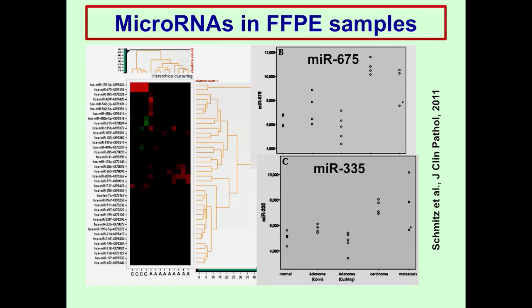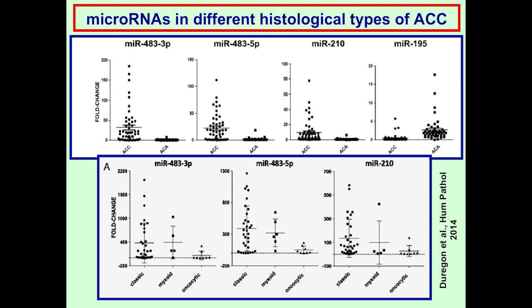As a demonstration of how archived formalin-fixed samples can be used for diagnosis, another study showed another set of overexpressed microRNAs — including miR-503 — and the two most significantly overexpressed were miR-675 and miR-335. In another recent study, microRNAs previously shown to be overexpressed, like miR-483 and miR-210, were also confirmed, and miR-195 was underexpressed. But in a small subset of non-classical histological types of adrenocortical cancer, such as myxoid and oncocytic variants, the expression of these microRNAs was different, showing this might be another distinguishing feature.